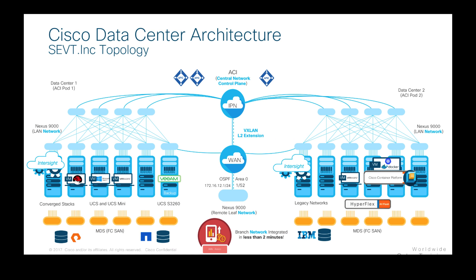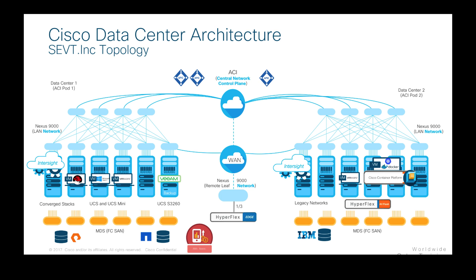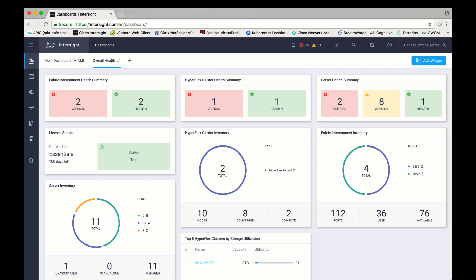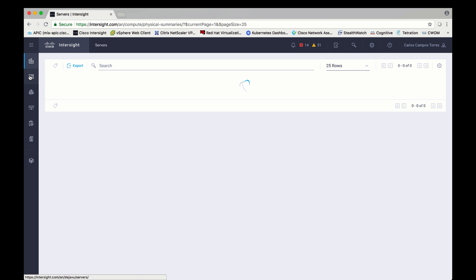We could achieve the same thing at the remote branch with a hyperconverged approach using Hyperflex Edge. By having a set of three Hyperflex nodes directly connected to the network without UCS fabric interconnects and using Intersight, we can not only monitor every UCS and Hyperflex system centrally, as we mentioned in the previous video, but we could also automate the deployment of our hyperconverged environment. So we could go back into Intersight, our software-as-a-service solution, where we are currently monitoring all our UCS blade, rack, storage, and Hyperflex servers.